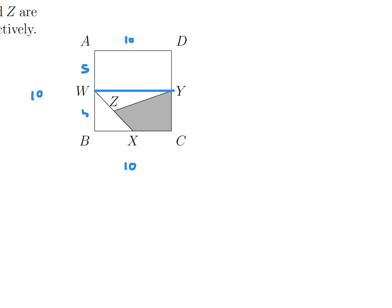So if you look at that rectangle W, Y, B, C, that's basically a 5 times 10, which is 50, is the area.